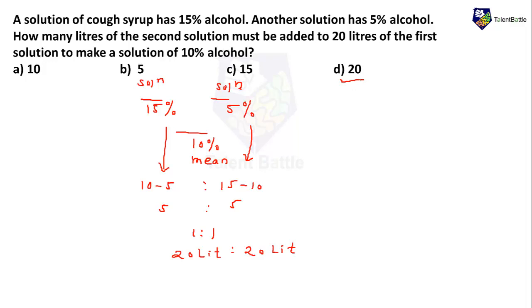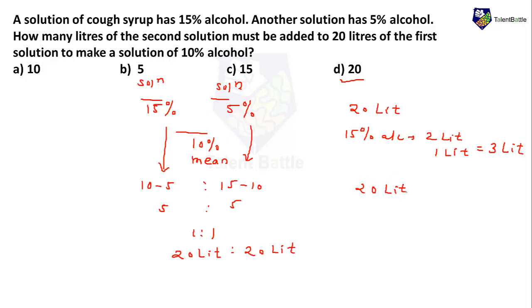If you don't know the alligation mixture topic, I recommend first understanding the concept and then this question becomes very easy. We can cross-check: Solution 1 is 20 liters at 15% alcohol — 10% of 20 is 2 liters, plus an extra 5% is 1 liter, so 3 liters of alcohol. Solution 2 is 20 liters at 5% alcohol — that is 1 liter of alcohol. Total solution is 40 liters with 4 liters of alcohol, which is exactly 10%.